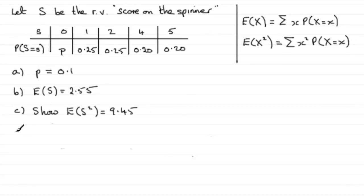So when we're working out E of S squared, it's got to be then the sum of all the observed values S squared multiplied by the probability that S equals S. So that means that we're going to do 0 squared multiplied by P, plus 1 squared multiplied by 0.25, and so on.